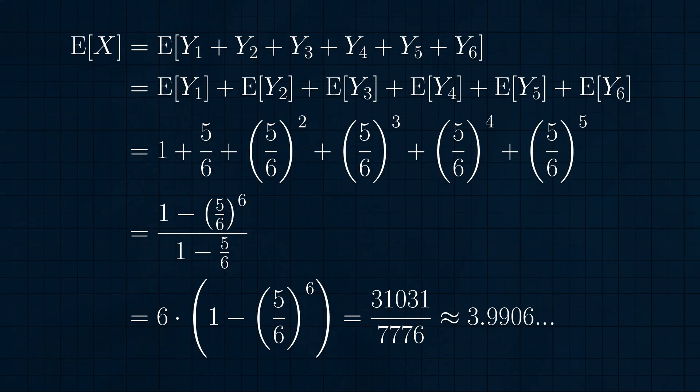Once again, the expected number of snowboards used is the sum of the expected value of our indicator variables. This is the first six terms of a geometric series. We can sum that up using the formula (1 - (5/6)^6) / (1 - 5/6), or 6 times (1 - (5/6)^6), that's about 3.9906, exactly agreeing with what we got with our first use of indicator variables. Nice!